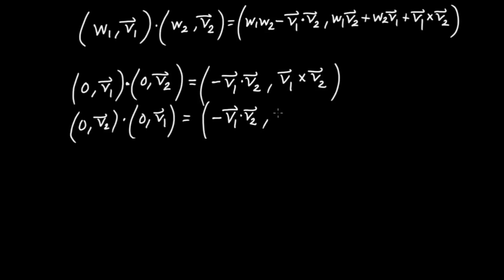Now let's look at the new vector part. Again, the W's go to zero. This time, notice that where before the cross product appeared in the order V1 cross V2, this time I have V2 cross V1.